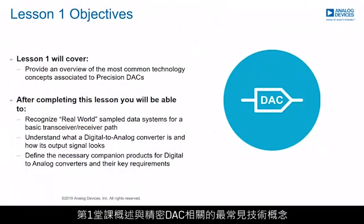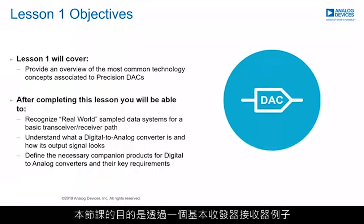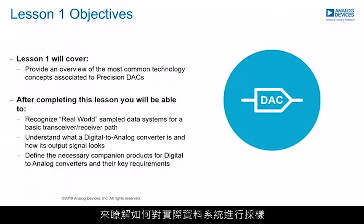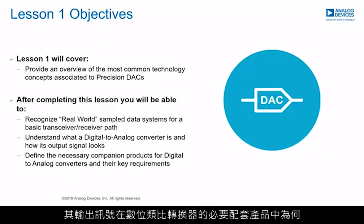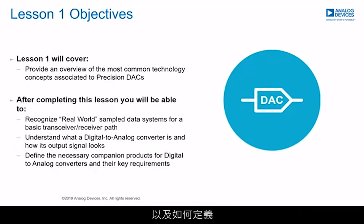Lesson one provides an overview of the most common technology concepts associated with precision DACs. The objectives are to understand how real-world data systems are sampled using a basic transceiver receiver example, to present what a digital-to-analog converter is and how its output signal looks, and to define the necessary companion products for DACs as well as their key requirements to maintain DAC performance.